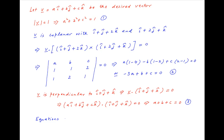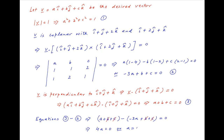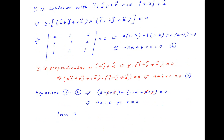Now subtracting equation 2 from equation 3, we get on the left hand side a plus b plus c minus (minus 3a plus b plus c), and this is equal to 0. b plus c cancel out and we are left with 4a is equal to 0, or a is equal to 0. Using this in equation 3, we get b plus c is equal to 0.